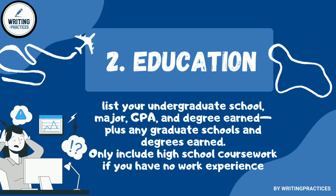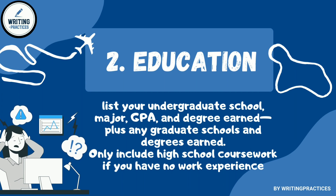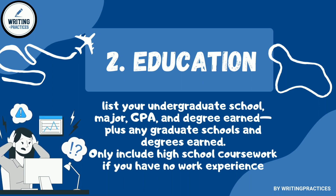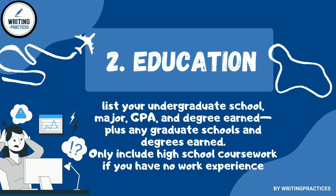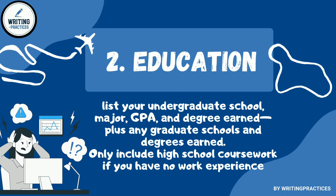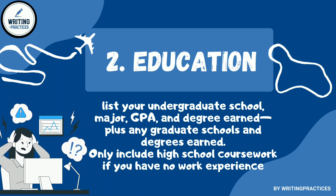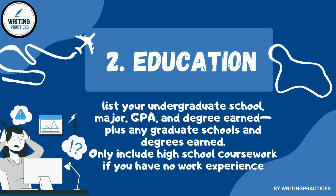Two: Education. In the education section, list your undergraduate school, major, GPA, and degree earned, plus any graduate schools and degrees earned. If you earned academic honors, include those as well. Only include high school coursework if you are very young and just starting out in the professional world.